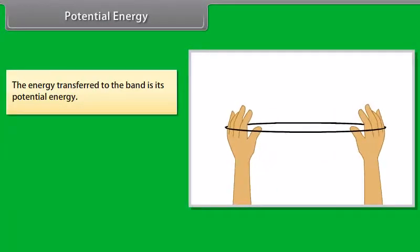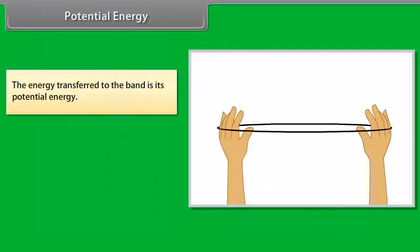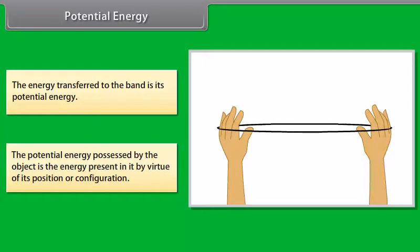We transfer energy when we stretch a rubber band. The energy transferred to the band is its potential energy. The potential energy possessed by the object is the energy present in it by virtue of its position or configuration.